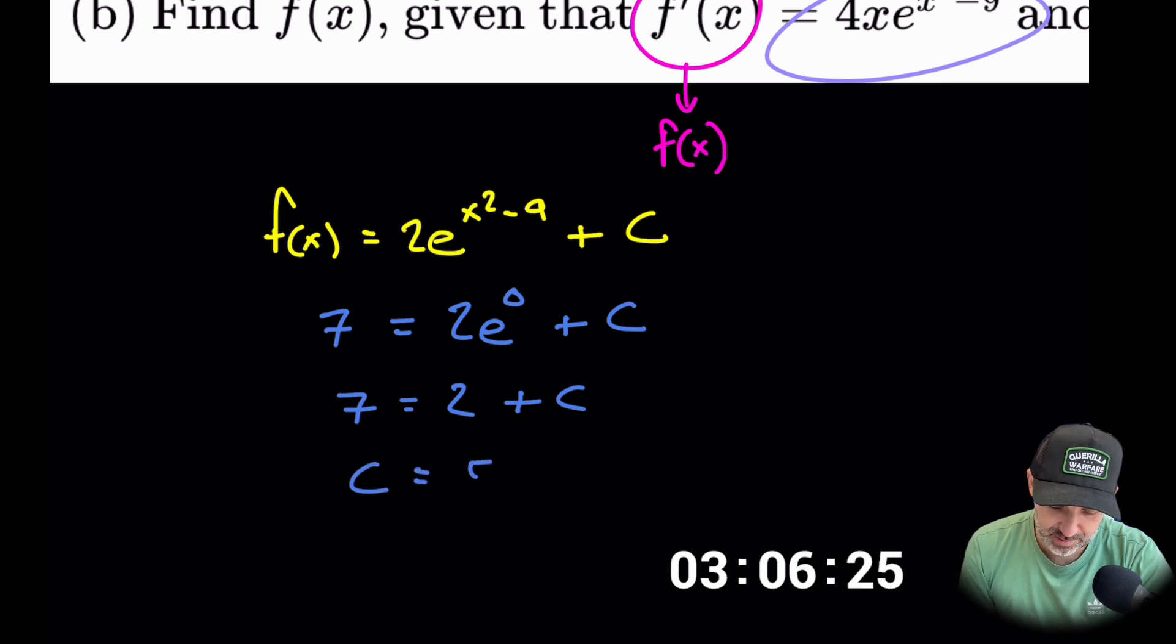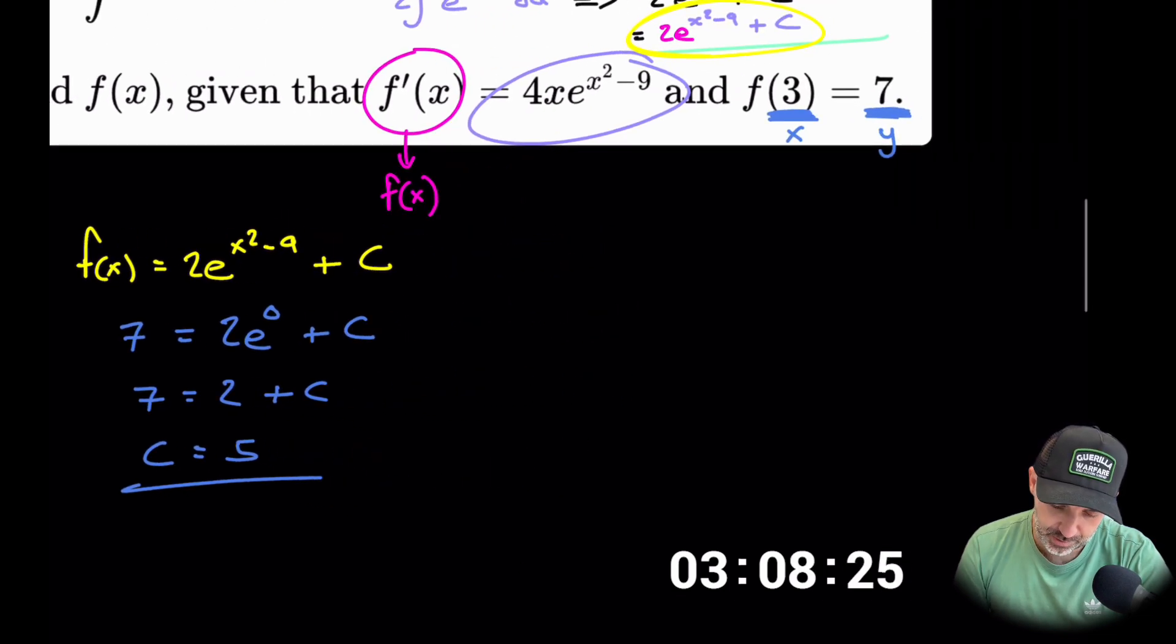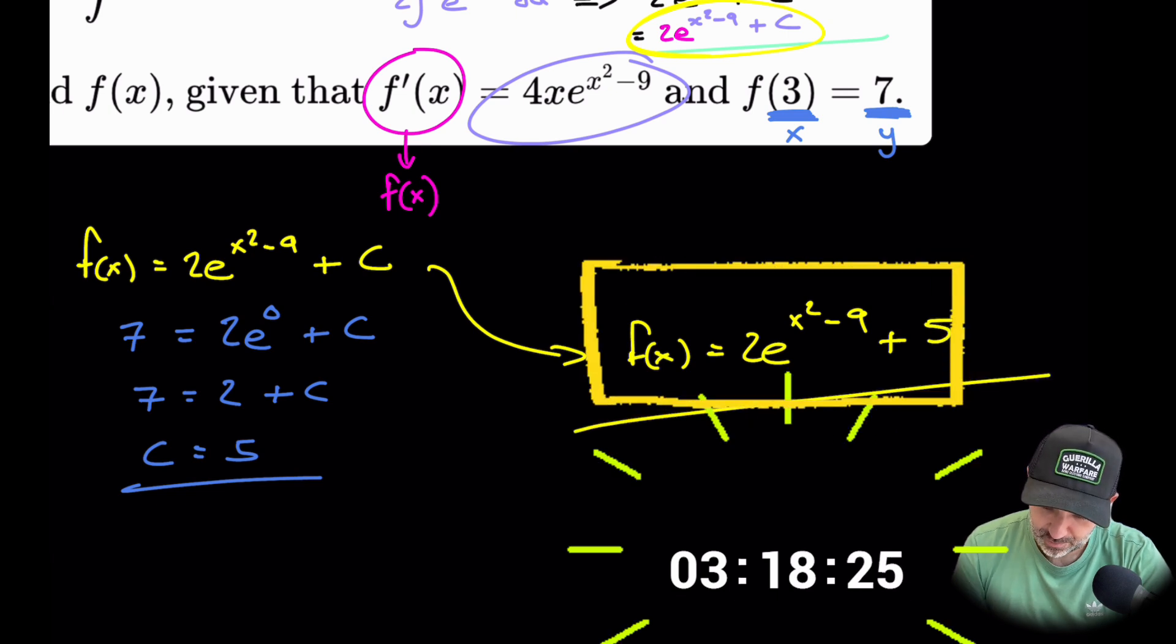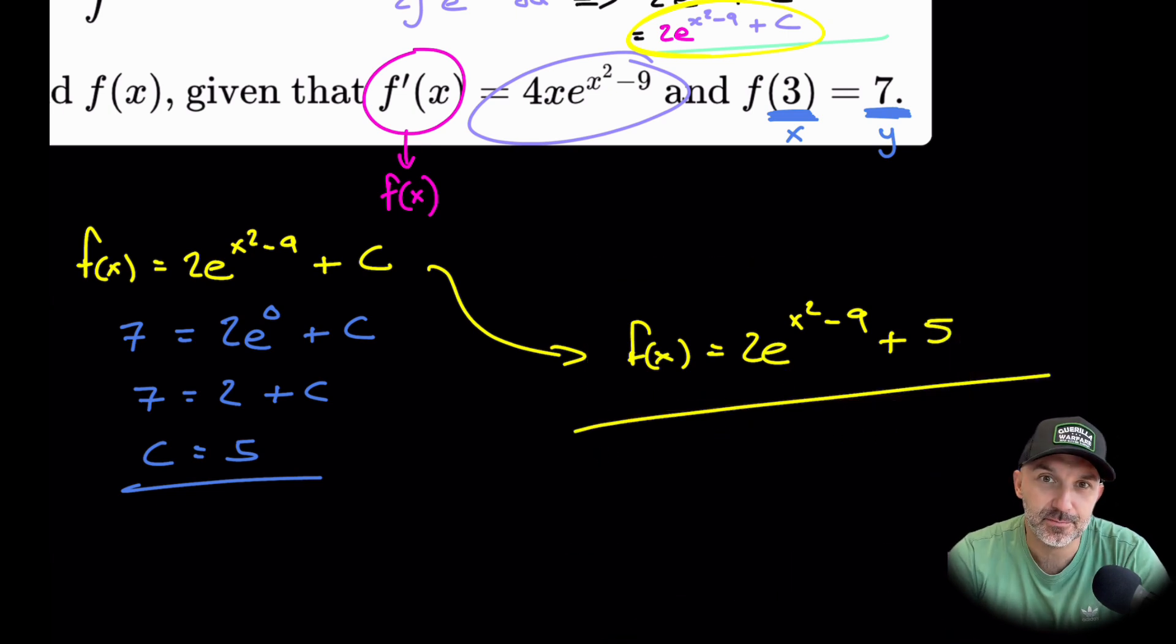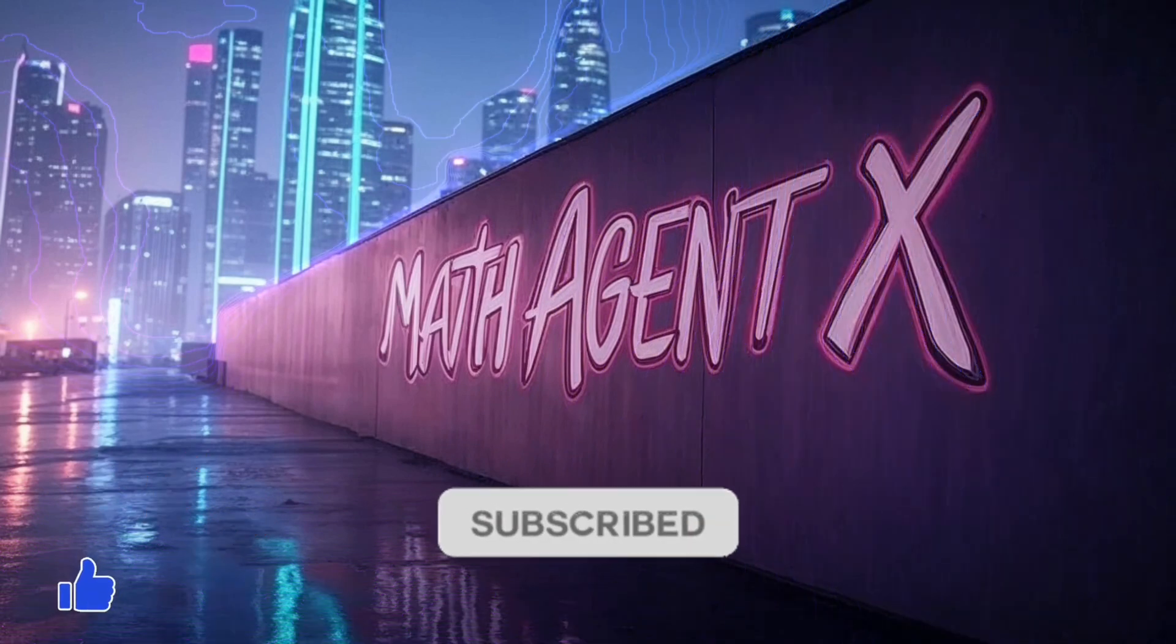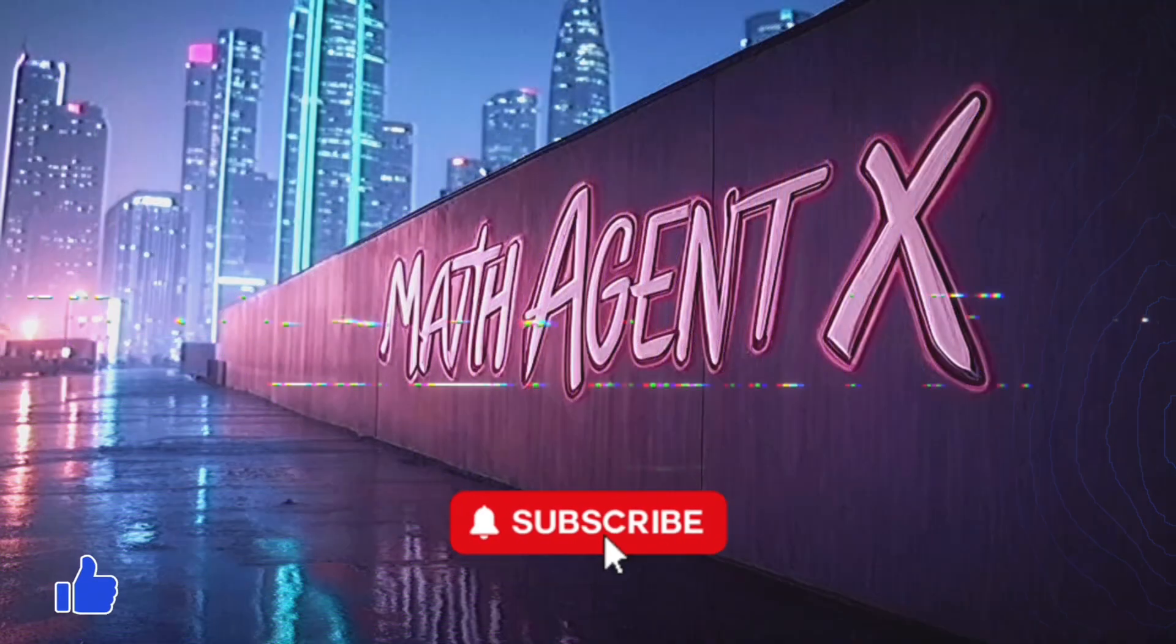So our final answer for the expression would be f(x) is equal to 2e to the x squared minus 9 plus 5. Stop the clock. Let me know how you get on in the comments below. Don't forget to like and subscribe to the channel. See you next time.